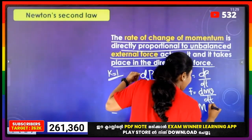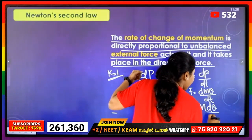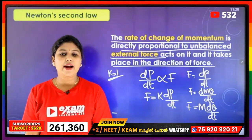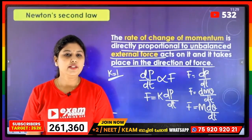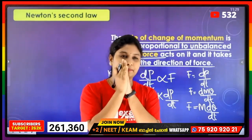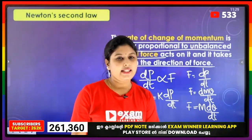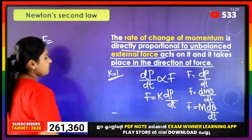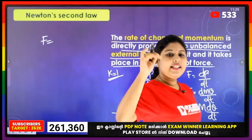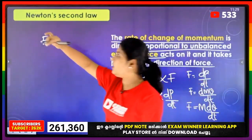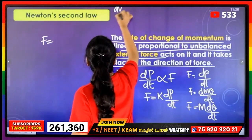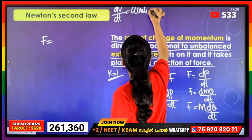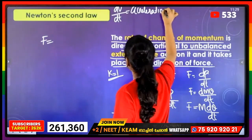That is equal to m into dv by dt. We can change the force into m into dv by dt. What is dv by dt? dv by dt is acceleration — rate of change of velocity is acceleration.